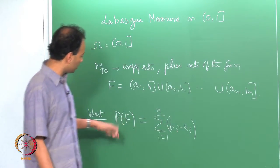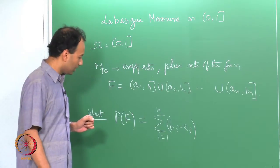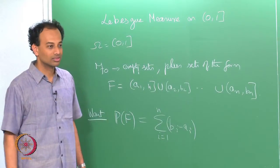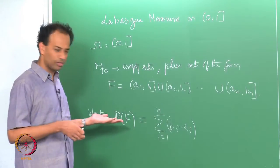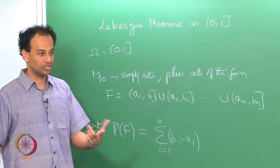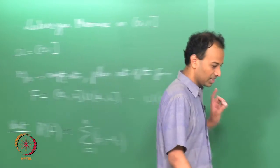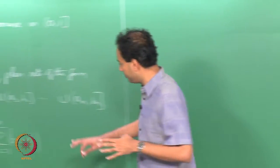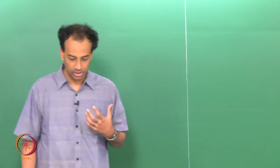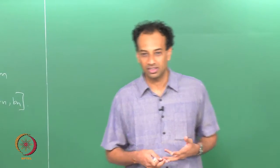The problem is that P has to be defined on a sigma algebra, but I only have an algebra. On this algebra F_naught I know what I want, but on the sigma algebra — which is the Borel sigma algebra — I do not know what it is, because the sigma algebra contains more complicated sets. So the key step is going from the algebra F_naught to the Borel sigma algebra. This is accomplished by a well-known theorem called the Carathéodory Extension Theorem, which I will state without proof.